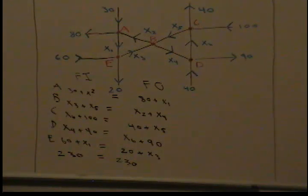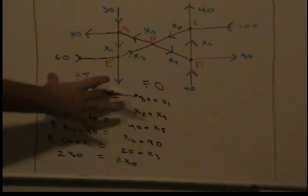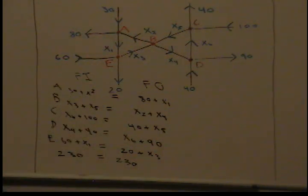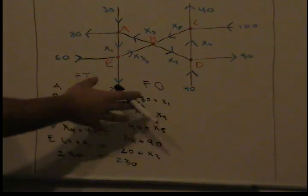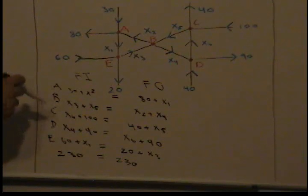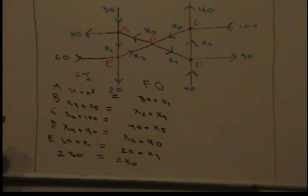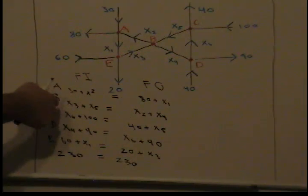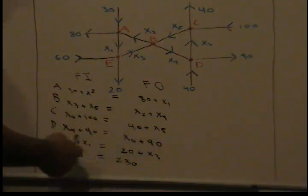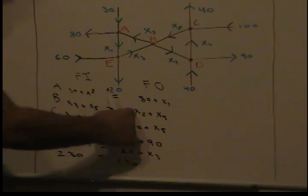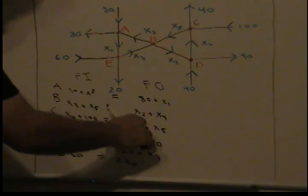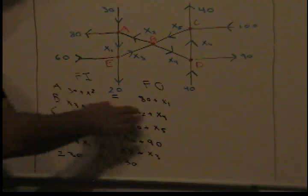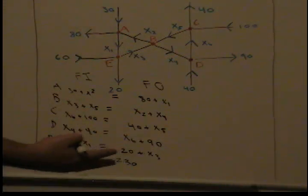Now we have a linear system. Our next step is to subtract and get everything on one side. The rule is that x1 always has to be positive, meaning you go from least to greatest among the subunits — whichever subscript is least stays, and everything else moves toward it. For example, for node B we have x3 plus x5 in and x2 plus x4 out; since x2 has the smallest subscript, the others come over to that side.